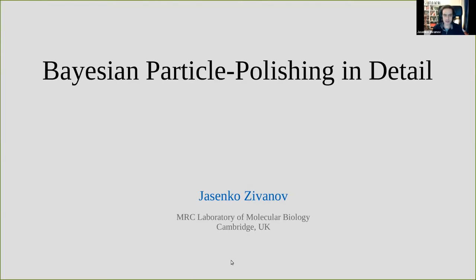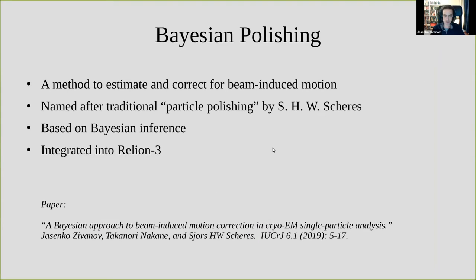Today I will tell you about Bayesian particle polishing in every gory detail. This will take a lot of time, so I need to speak fast. Bayesian polishing is a method to estimate beam-induced motion. It is inspired by the original particle polishing from RELION, which has been around for some eight years or so. Unlike the original polishing, Bayesian polishing is built around a rigorous Bayesian inference framework, described in a paper last year — at least the single particle part.